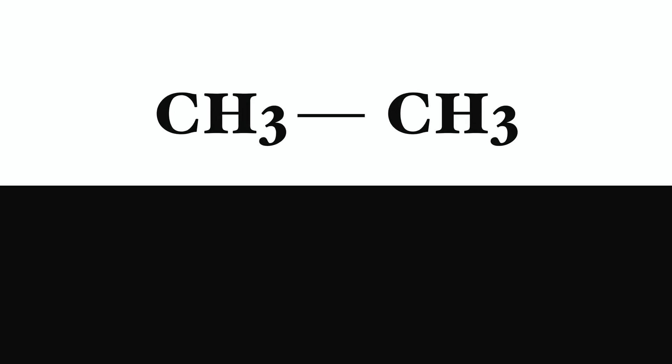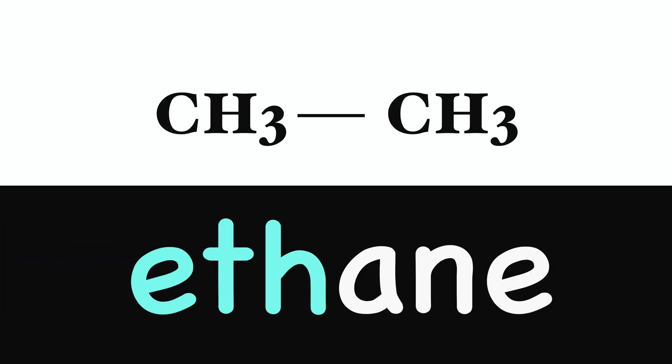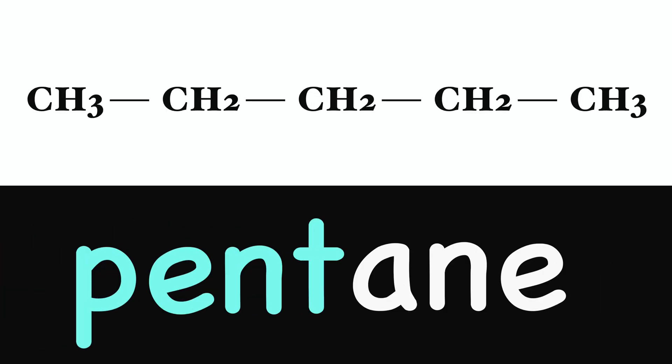Then we add a suffix '-ane', as in alkane, at the end. Therefore, alkane with two carbons is called ethane. Alkane with five carbons is called pentane, and etc.